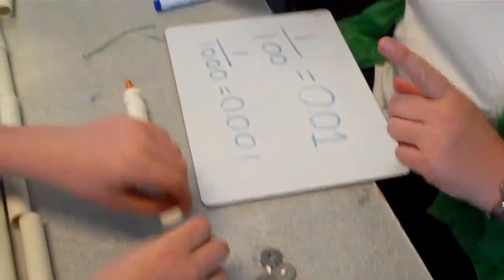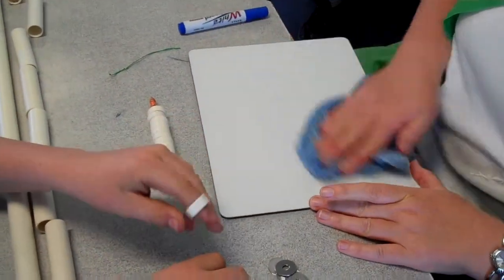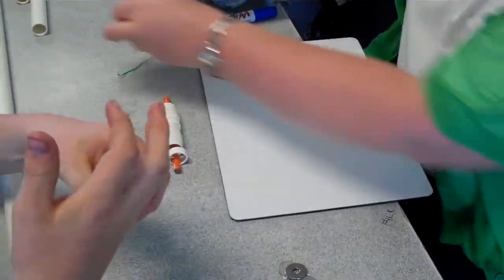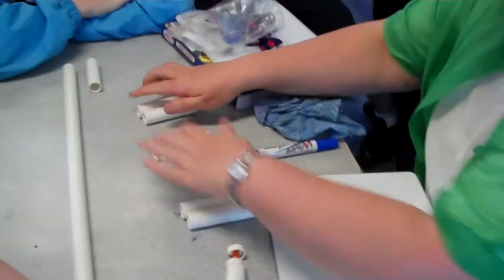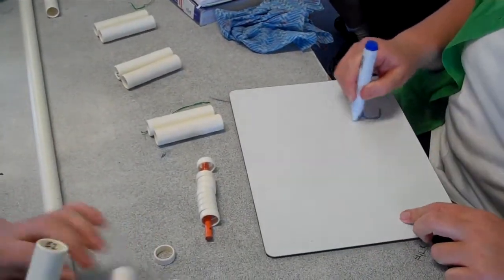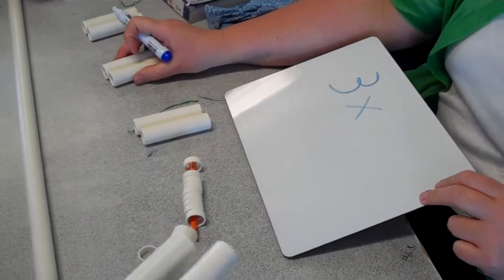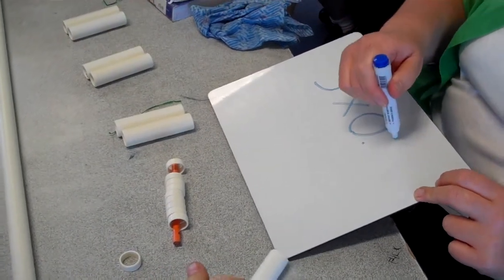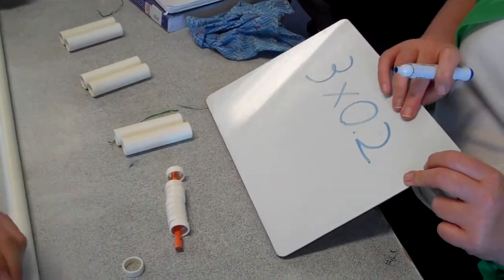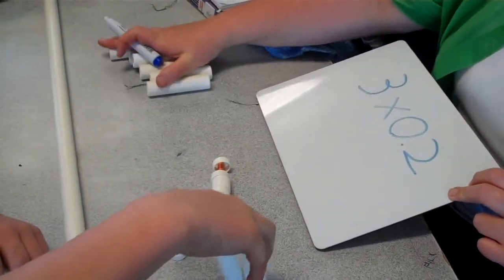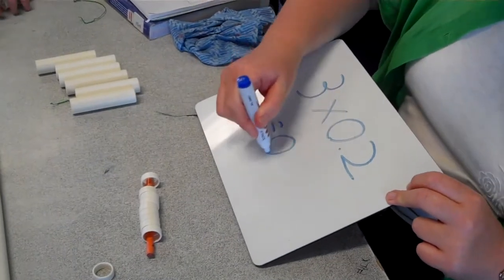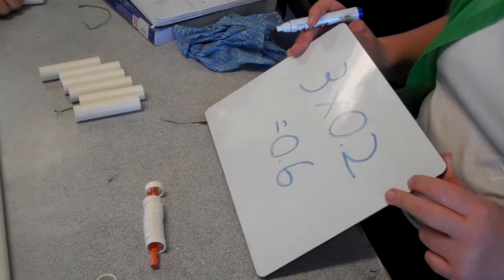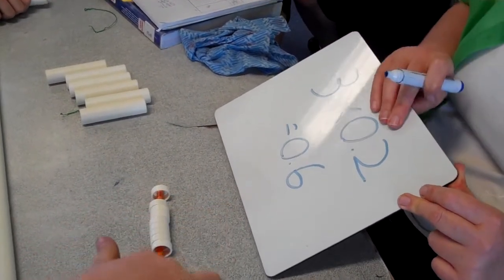Today we're going to do multiplying decimals by whole numbers. If I said to you, what's three lots of what I've got there — two tenths — so I've got three lots of two tenths, how many have I got altogether? Six tenths. That's what we're going to be looking at: multiplying whole numbers by decimals.